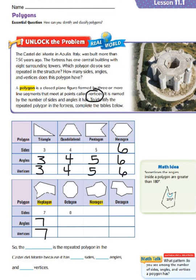Our octagon has eight sides — one, two, three, four, five, six, seven, eight. So if our octagon has eight sides, it's also going to have eight angles and eight vertices.